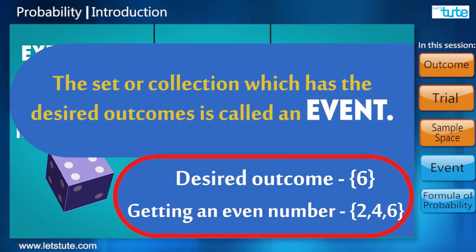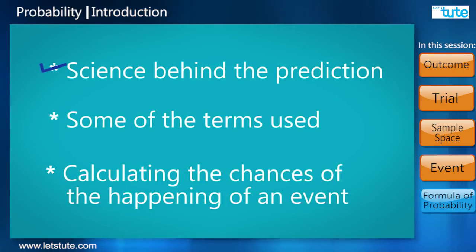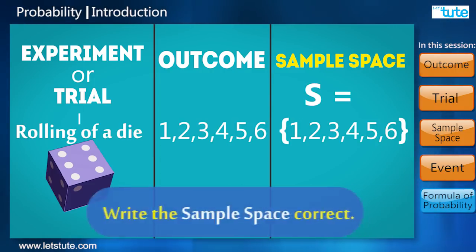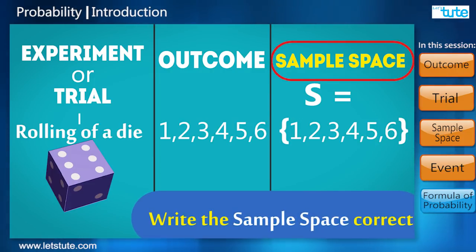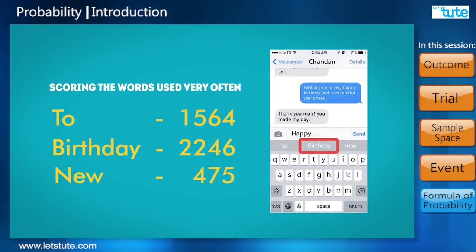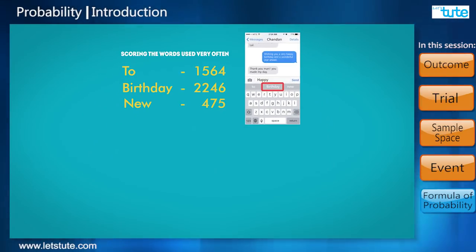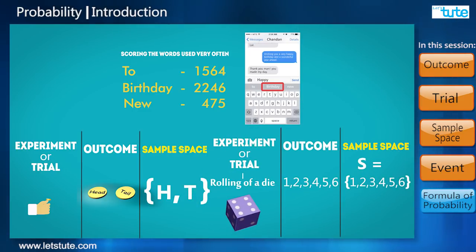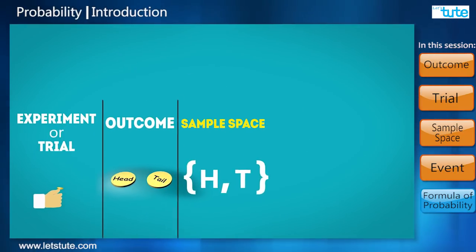To calculate our probability correctly, it is very essential that we write our sample space correct. So far we've seen two parts: first one is the prediction of the texts while messaging, and tossing of a coin or rolling a die. Tell me friends, are you able to connect to them?